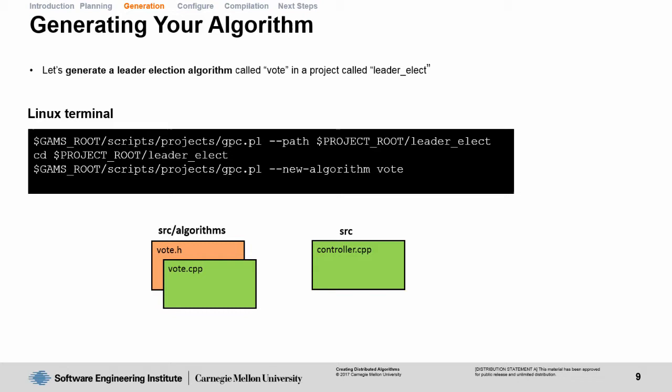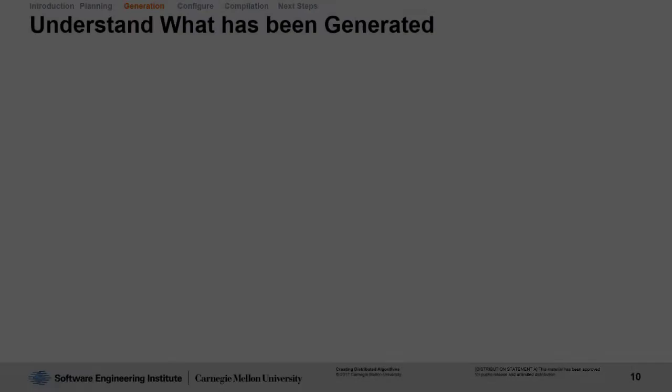The first two files are vote.h and vote.cpp in your source algorithms folder, and the third file is the controller.cpp file in your source directory. You're not going to have to modify your controller.cpp file, but we will be modifying our vote.h and vote.cpp file. Don't worry, these files are also included as part of the tutorial materials.